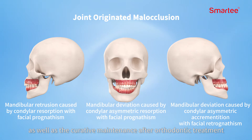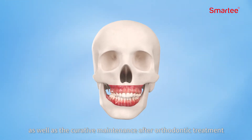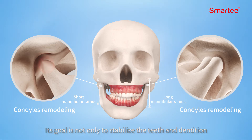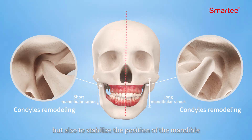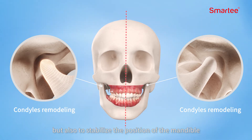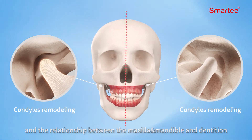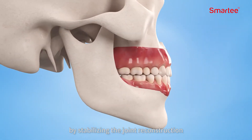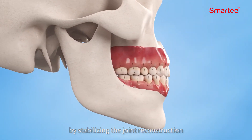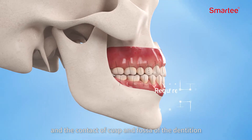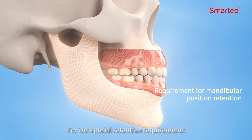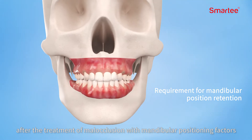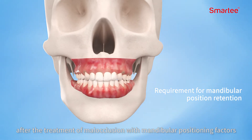As well as the curative maintenance after orthodontic treatment, the goal is not only to stabilize the teeth and dentition, but also to stabilize the position of the mandible and the relationship between the maxilla, mandible, and dentition by stabilizing the joint reconstruction and the contact of cusp and fossa of the dentition — fulfilling the special retention requirements after treatment of malocclusion with mandibular positioning factors.